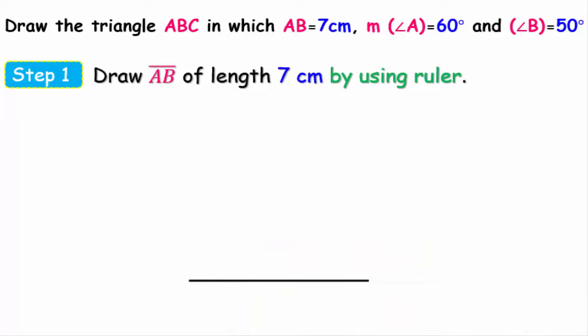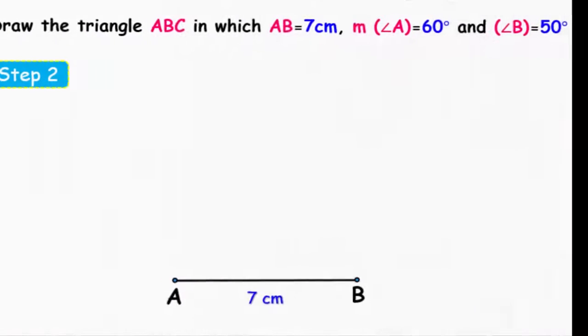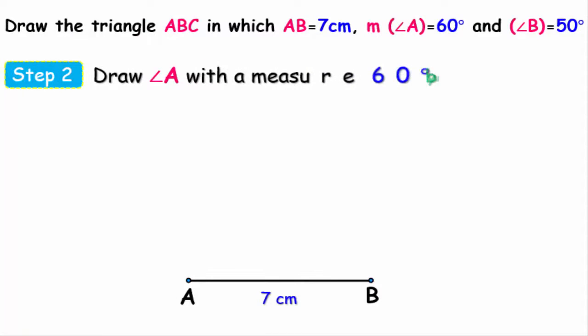Don't forget to write the start and end points for this line segment. The second step: using the protractor, we draw an angle A whose measure is 60 degrees.